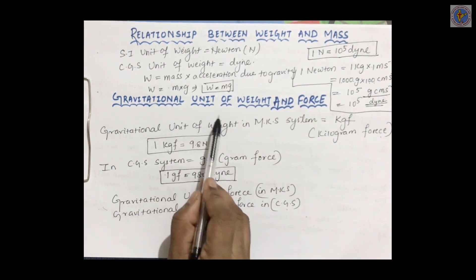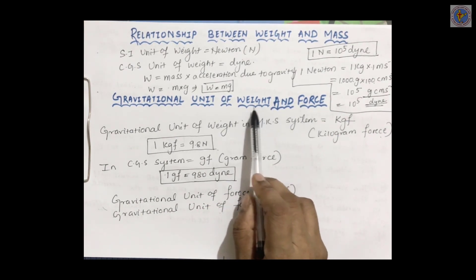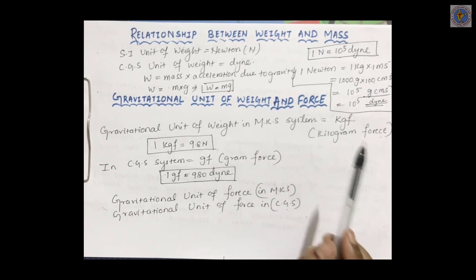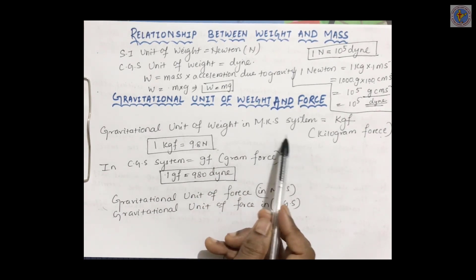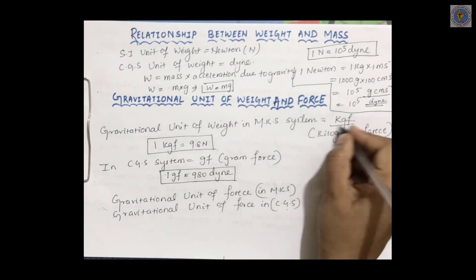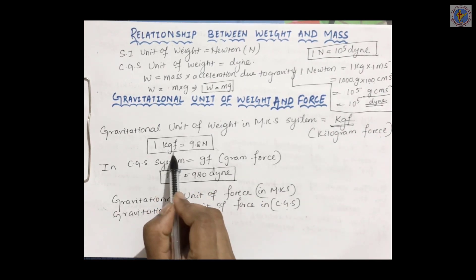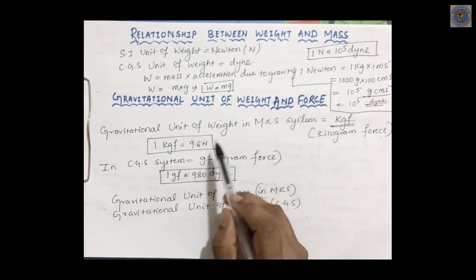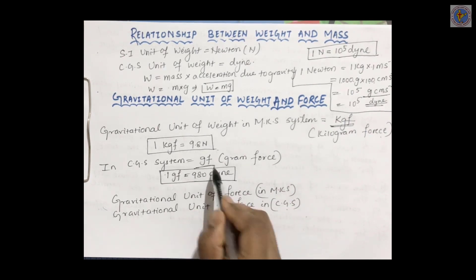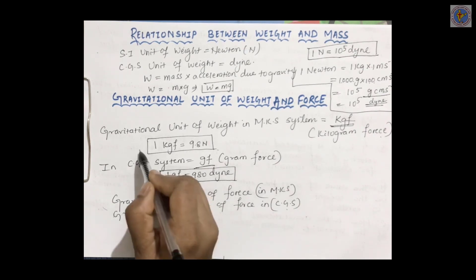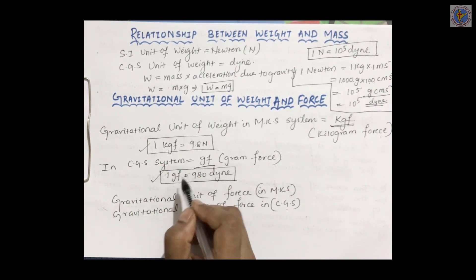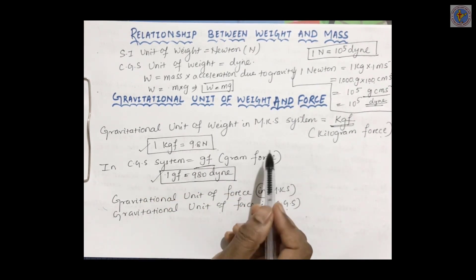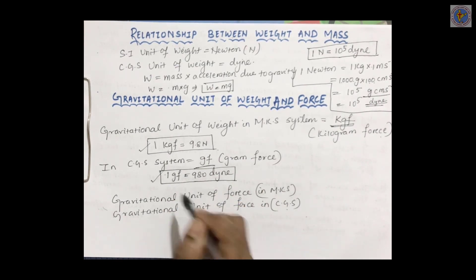Now let us learn the gravitational unit of weight and force. One similarity we can find between weight and force is that the unit of both is Newton. The gravitational unit of weight in the MKS system is kgf, that is kilogram force, and 1 kilogram force is equal to 9.8 Newton. In the CGS system, the gravitational unit of weight is gram force, and 1 gram force is equal to 980 Dyne. Remember this, as it will be very useful while doing numerical problems.